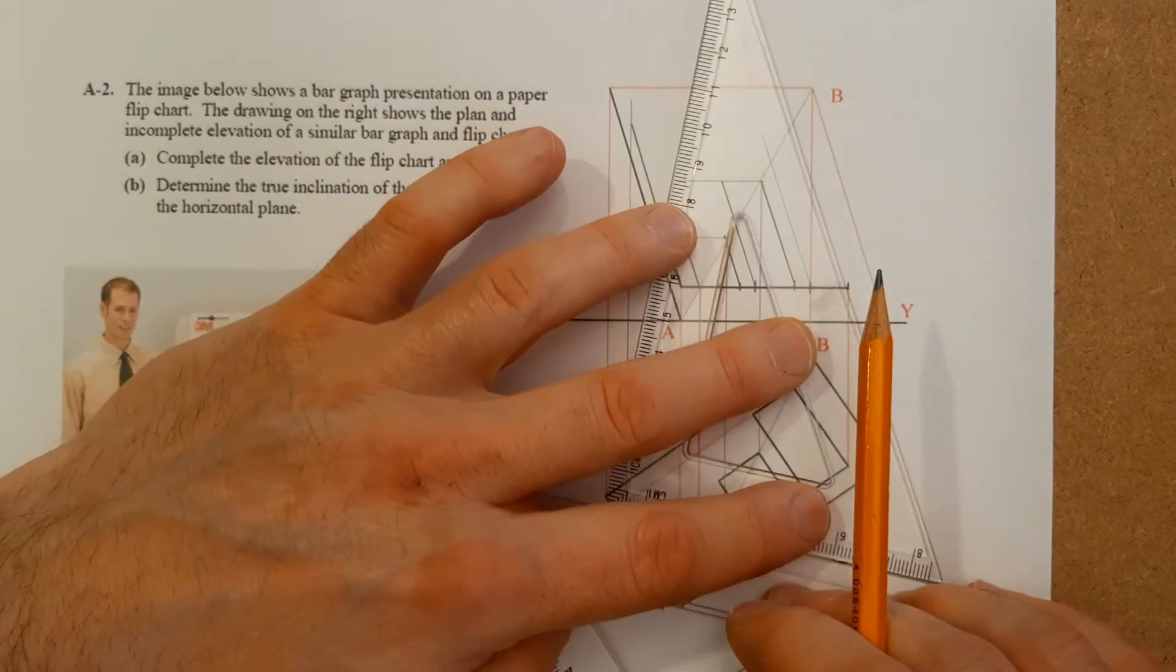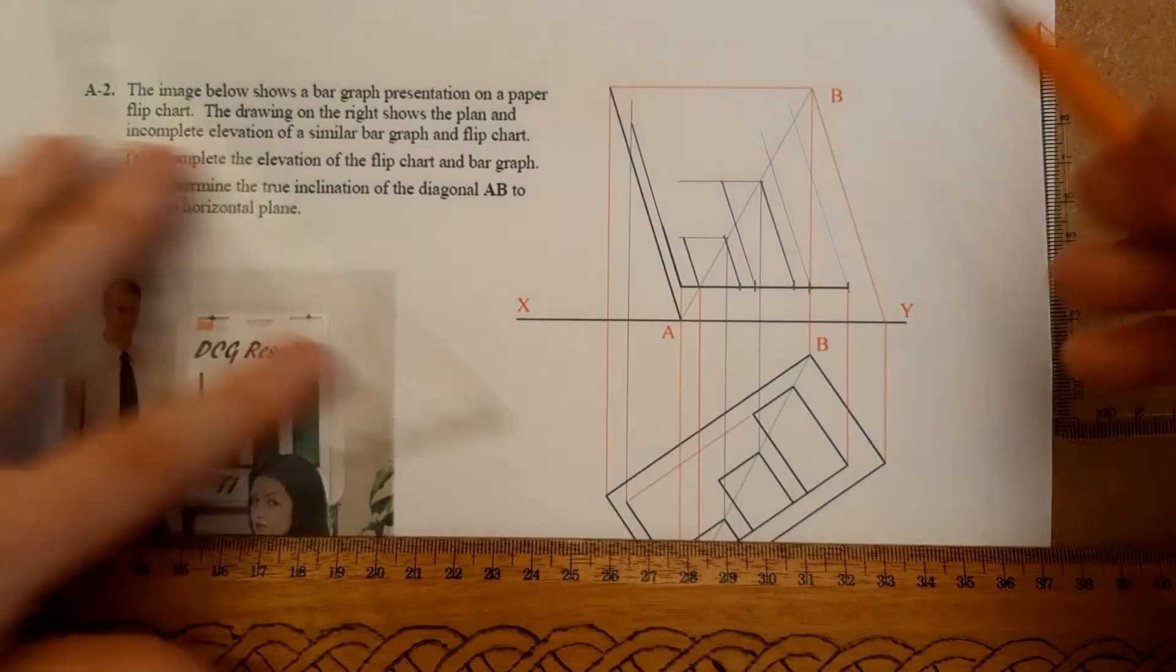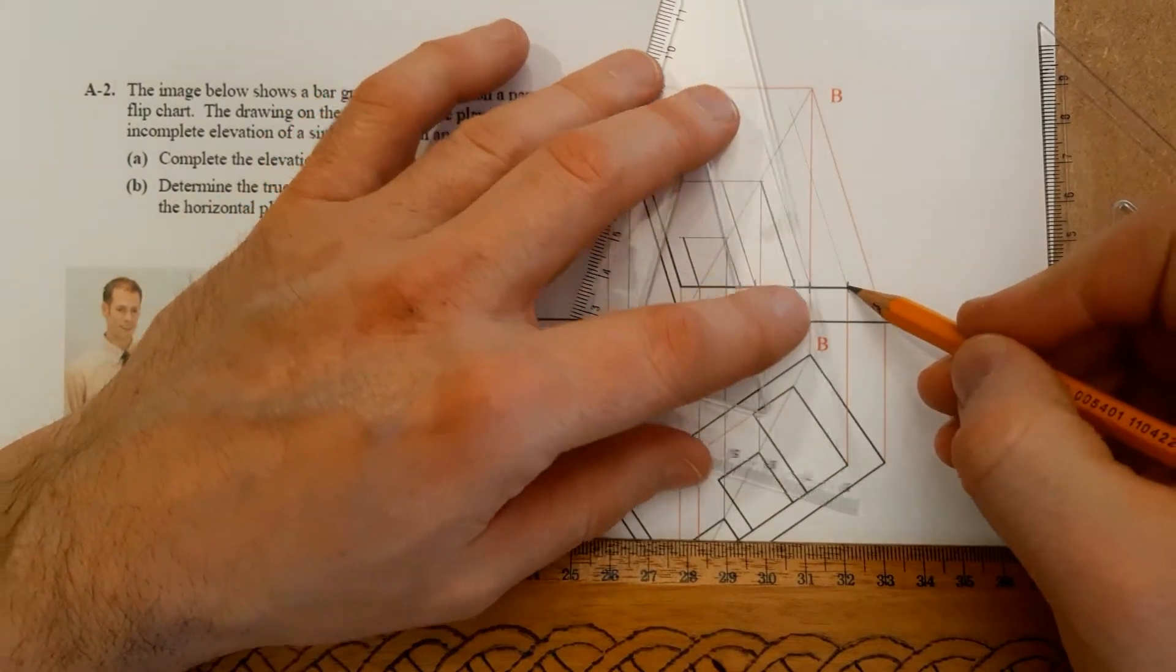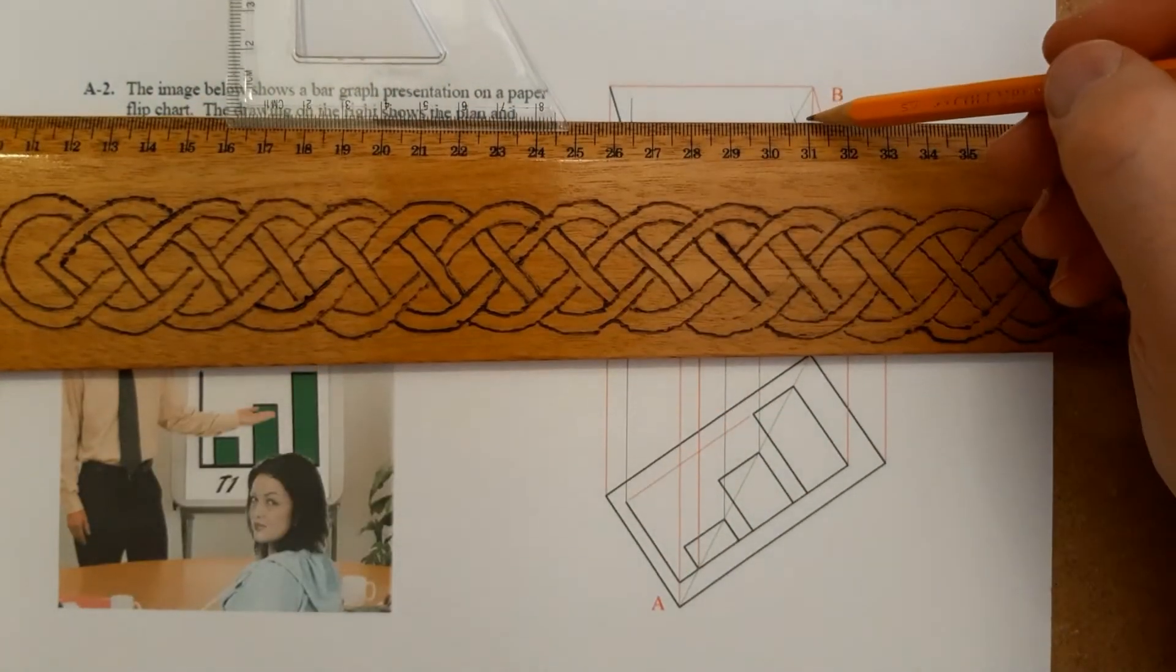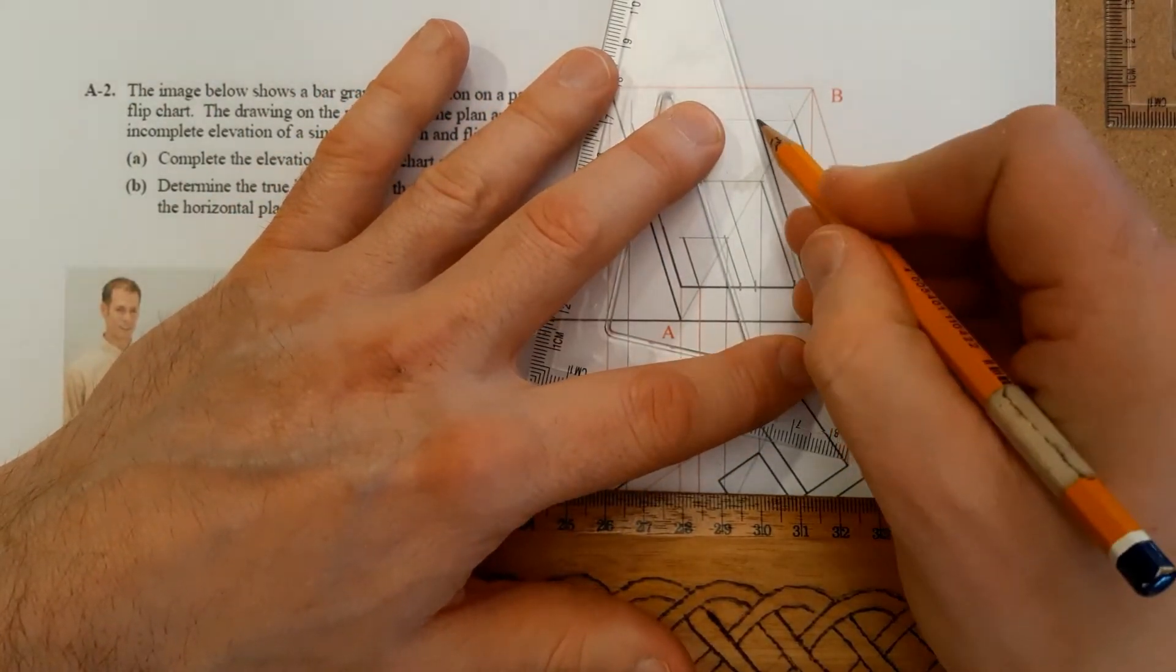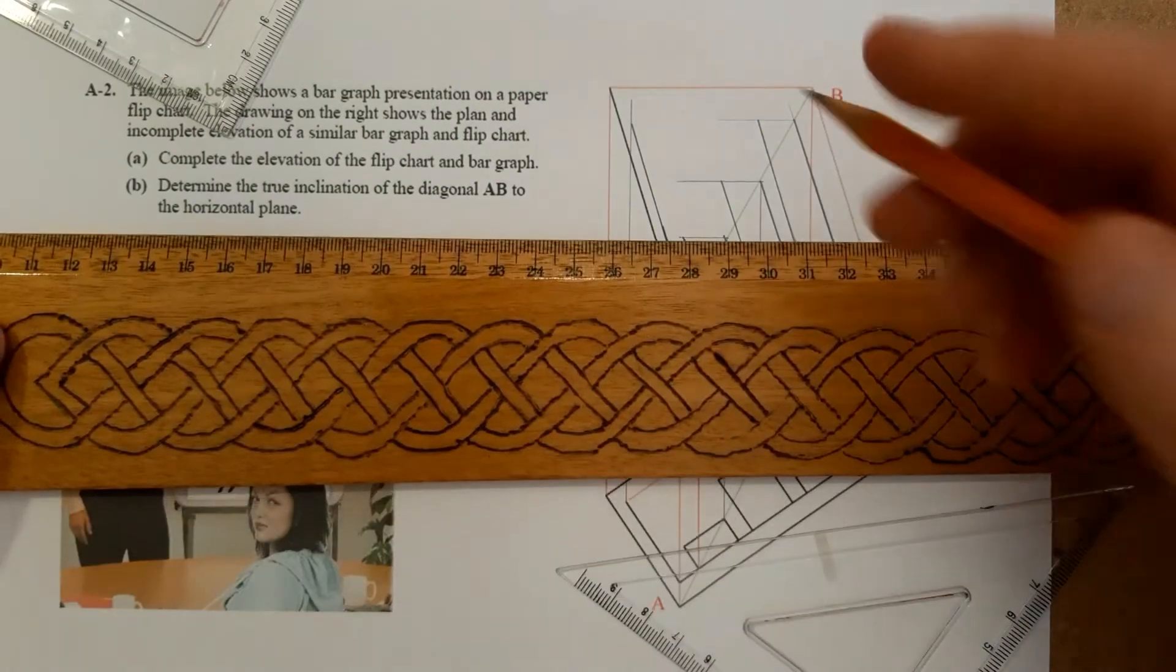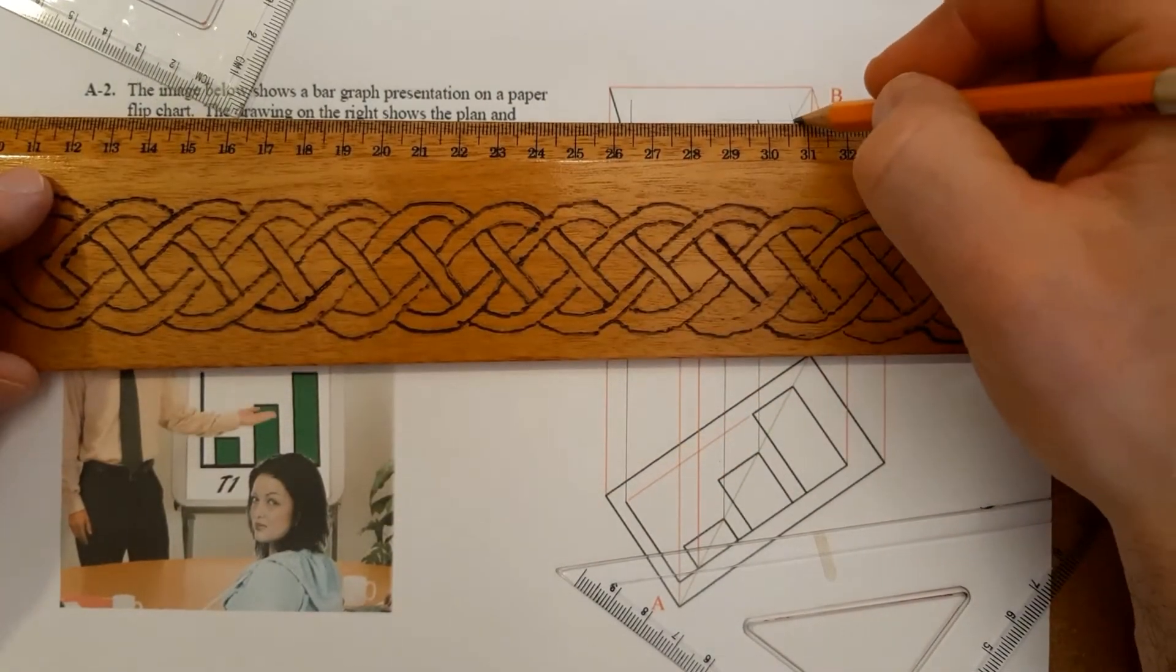The last one there, we'll just run this up lightly first of all. So he's going to go up there until he hits that green line. Bring him across and then we can finish out this here. That's part A of that done.